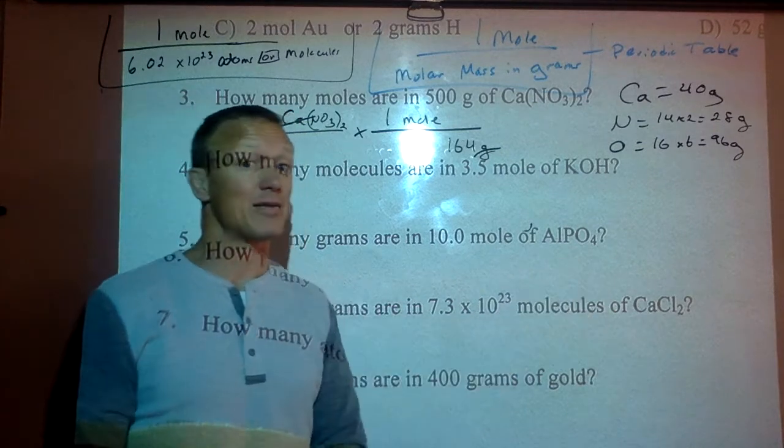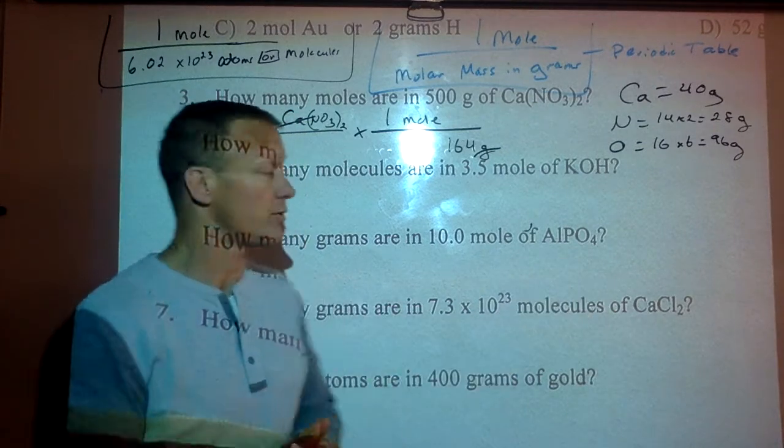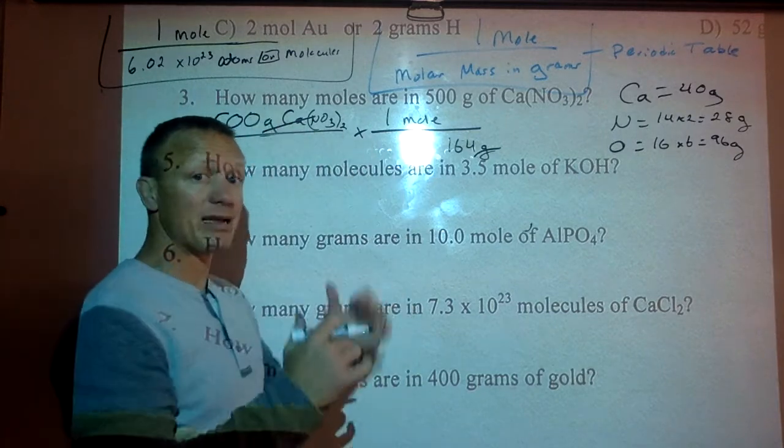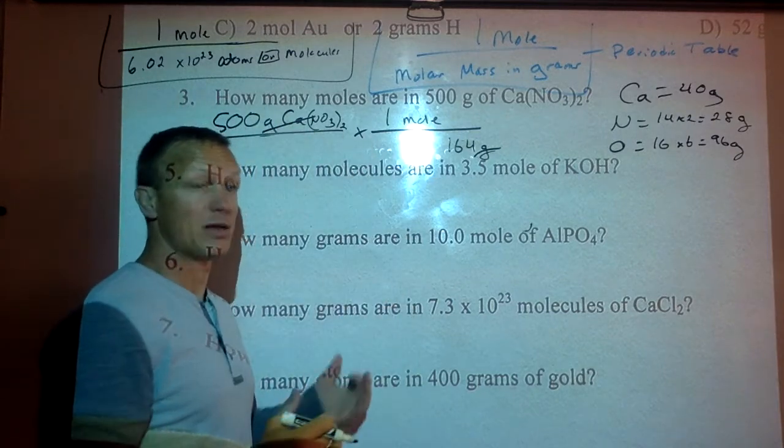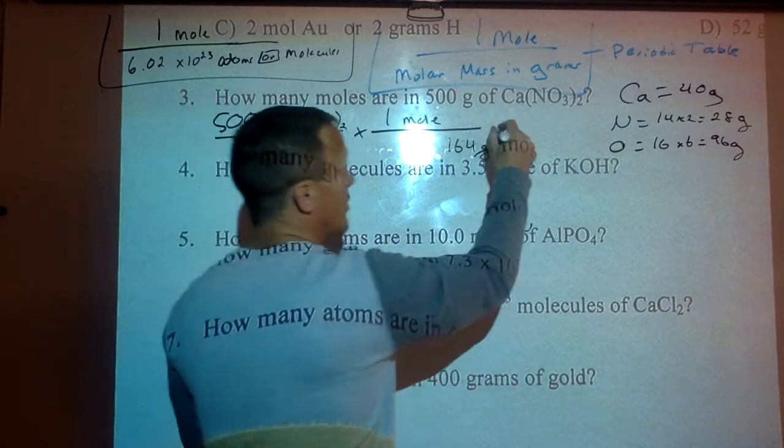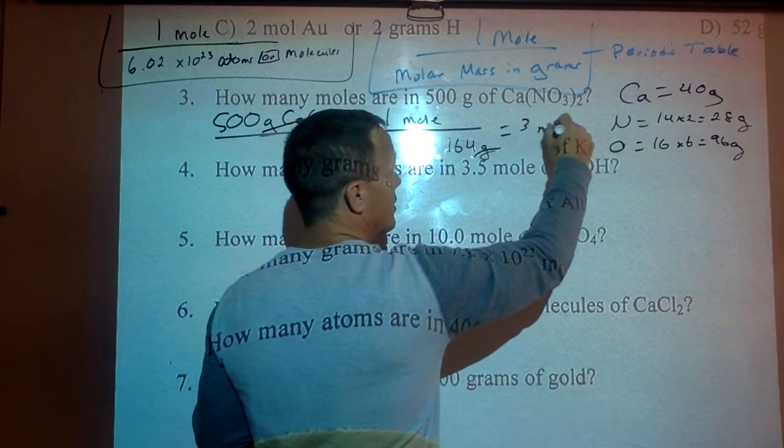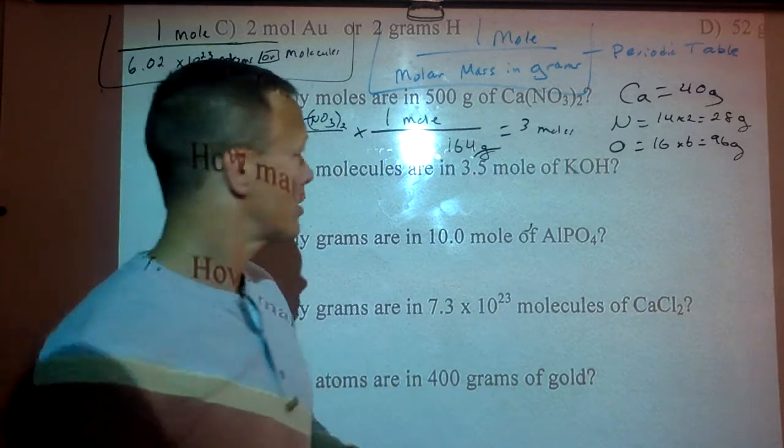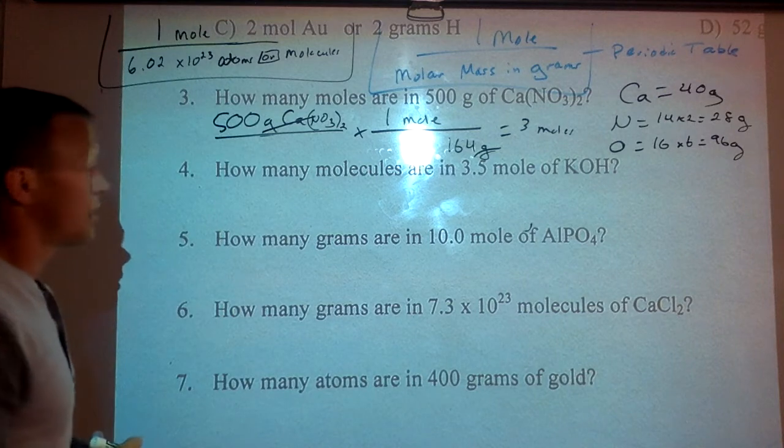So I'm taking 500 and dividing by 164. My labels tell me whether I'm multiplying or dividing by these numbers. That's approximately 3 moles.